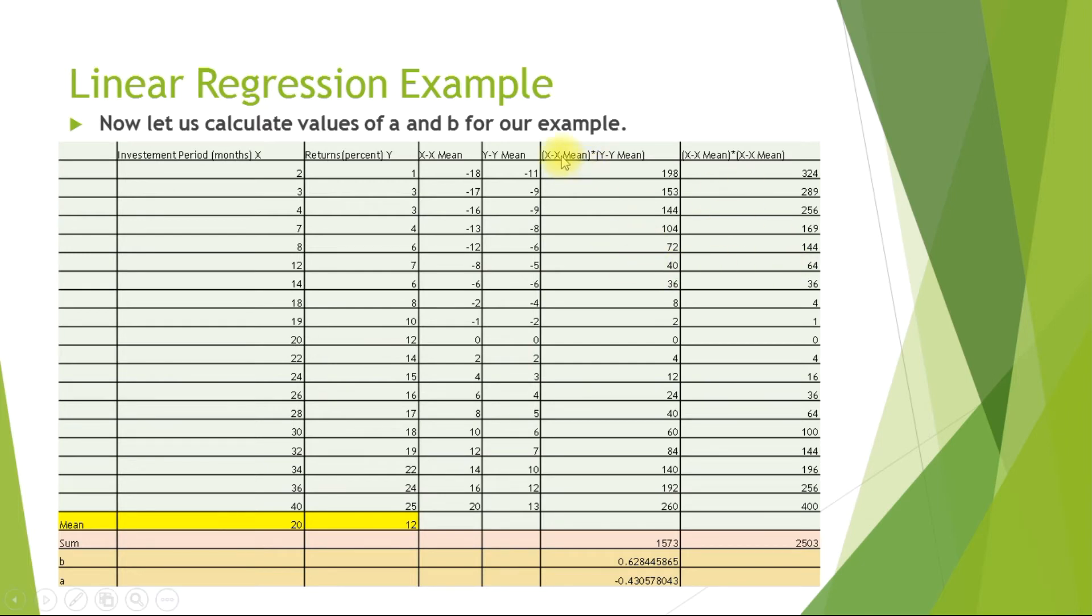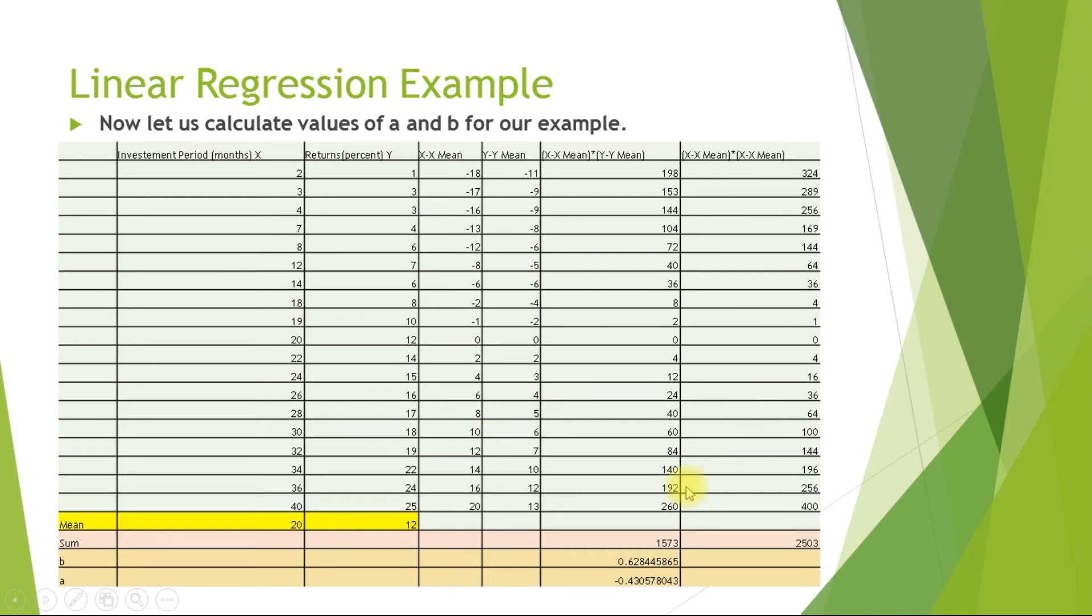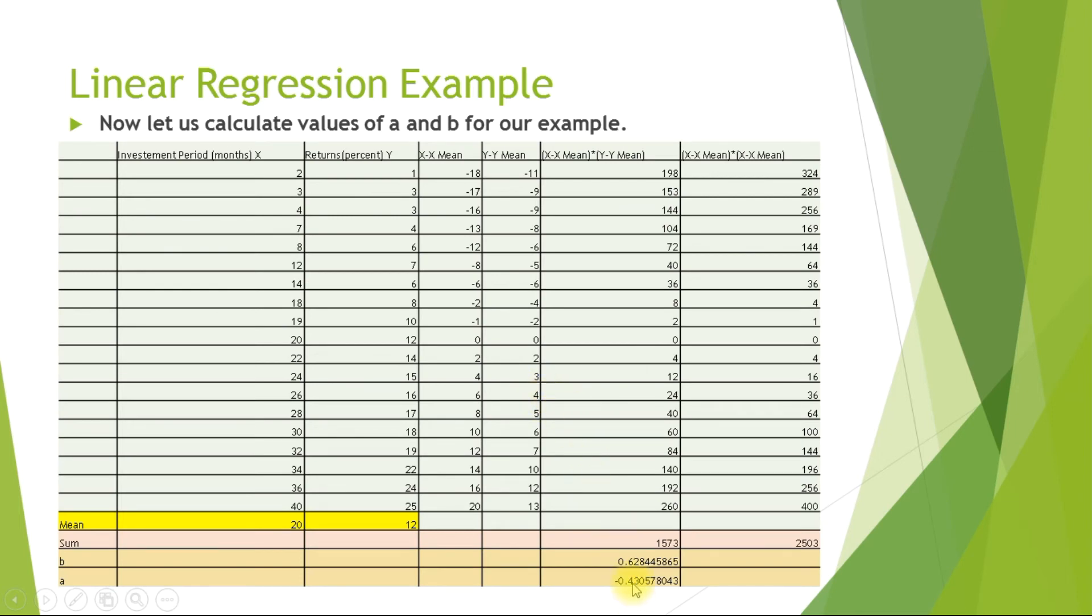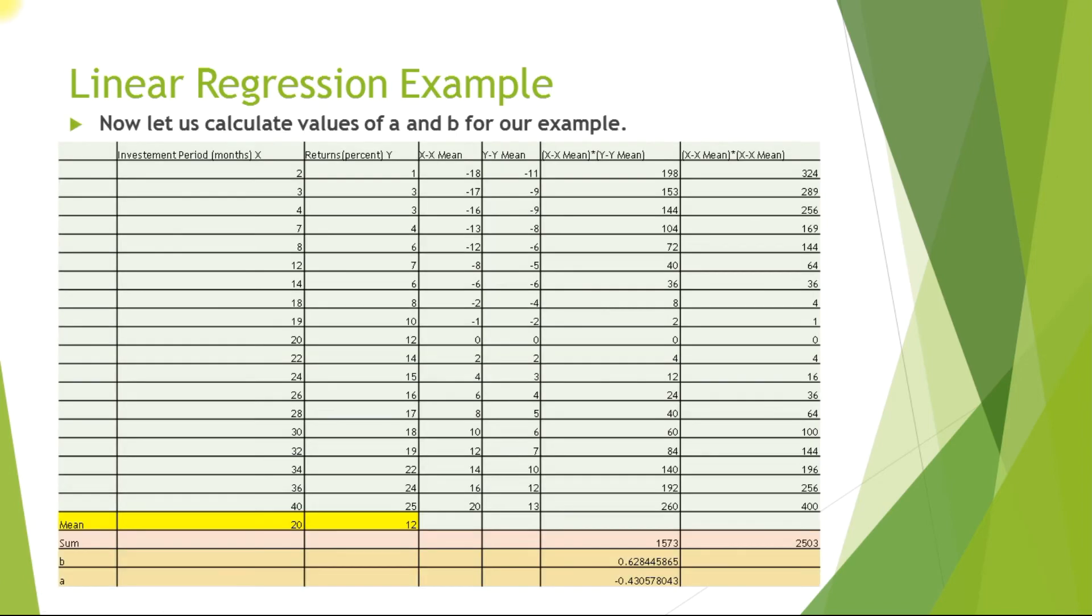We will be dividing this value with this value, and the result is 0.62. And when we substitute this b value and x mean value and y mean value in this equation, we get the a value as minus 0.43. Now our final model equation looks like this: y equals minus 0.43 plus 0.62x. I have simply substituted the a and b values in our equation.